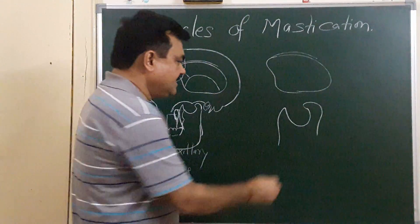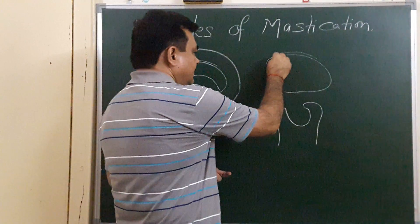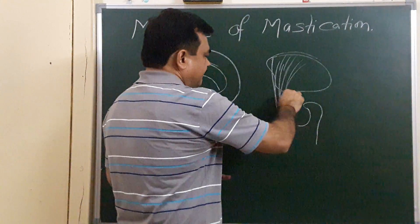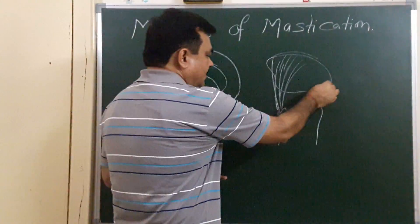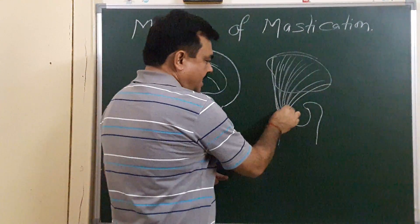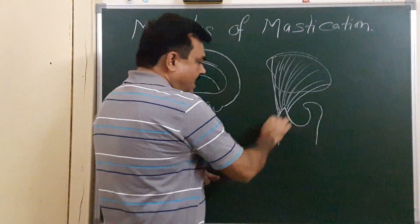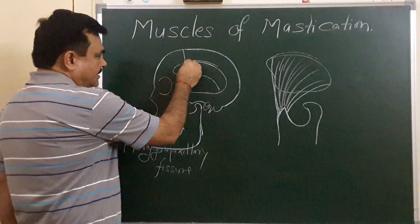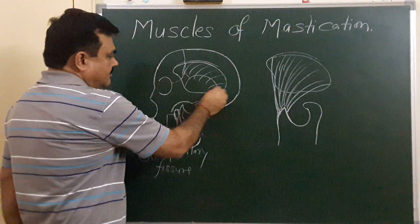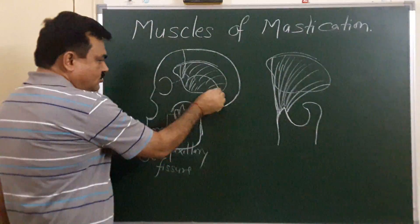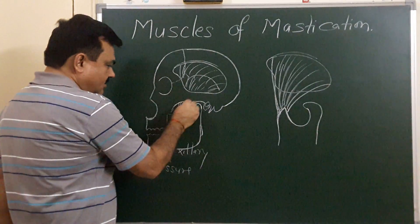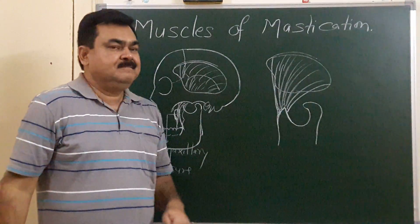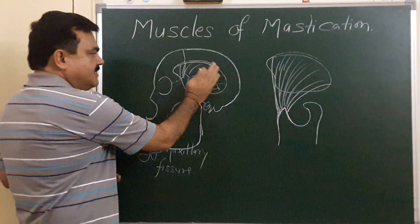This is the ramus of the mandible. From the temporal fossa, the muscle takes origin and is inserted on the borders of the coronoid process — this is the anterior border, this is the posterior border, and also on the deep surface of the coronoid process. The muscle passes deep to the zygomatic arch and is inserted on the coronoid process. This muscle is the temporalis, and it is covered by fascia.